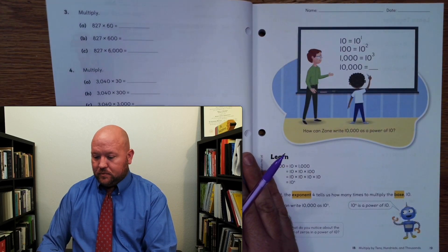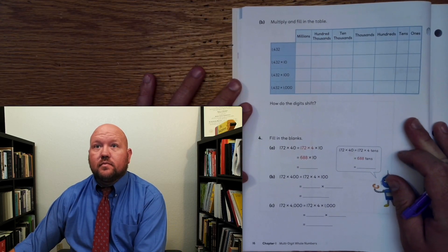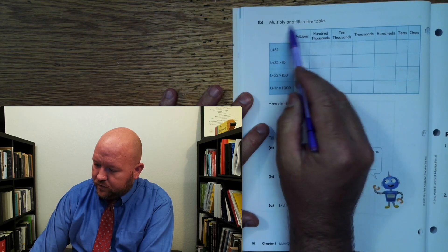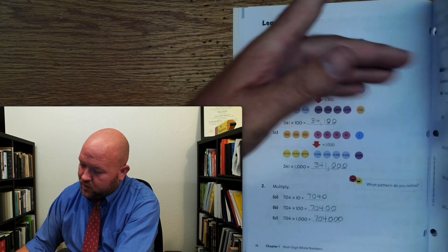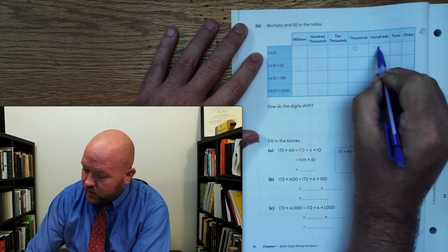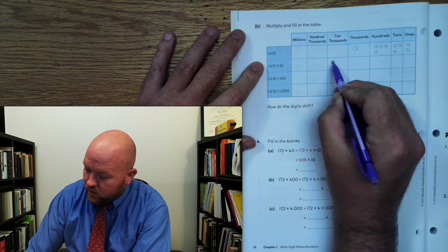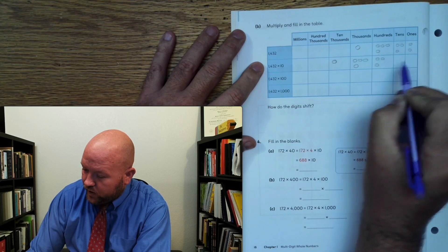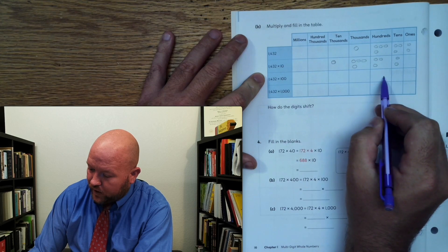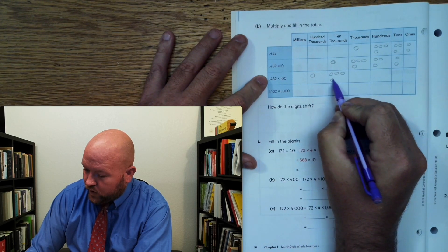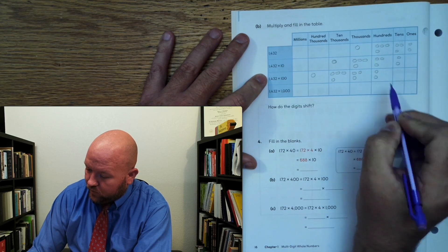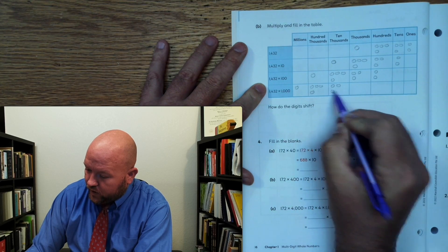Let's turn to page 16. So here, fill in the chart. We have 1,432 — so we're going to have 1 in the 1,000s, 4 in the hundreds, 3 in the tens, 2 in the ones. Now we're going to multiply it by tens — move everything over: 1 here, 4 here, 3 here, 2 there. Now we're going to move it over 2 spots: 1 here, 4 here, 3 here, 2 here. And now we're going to move it over 3 spots: 1 here, 4 here, 3 here, 2 here.